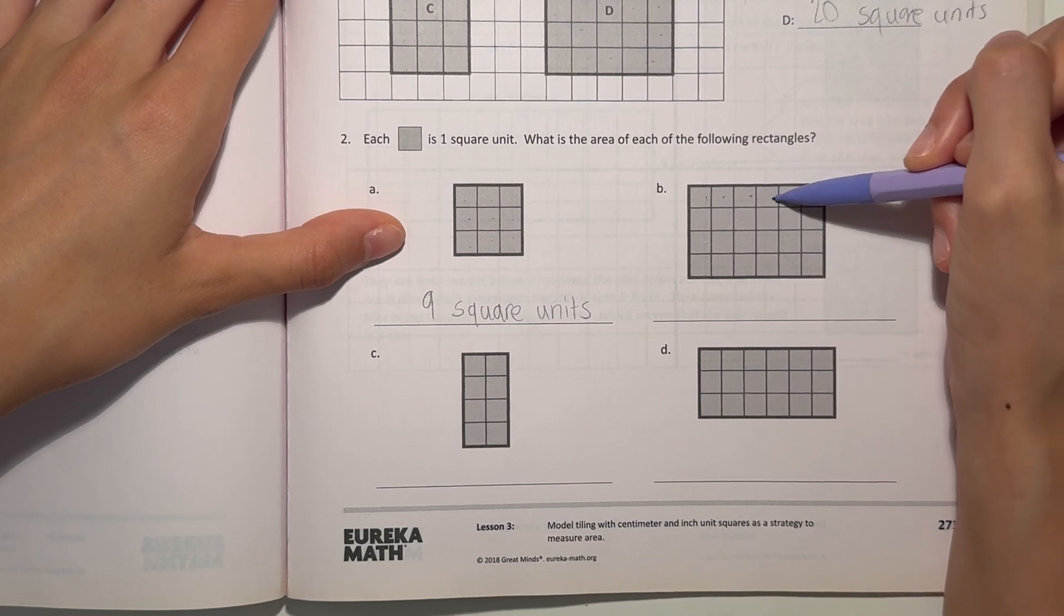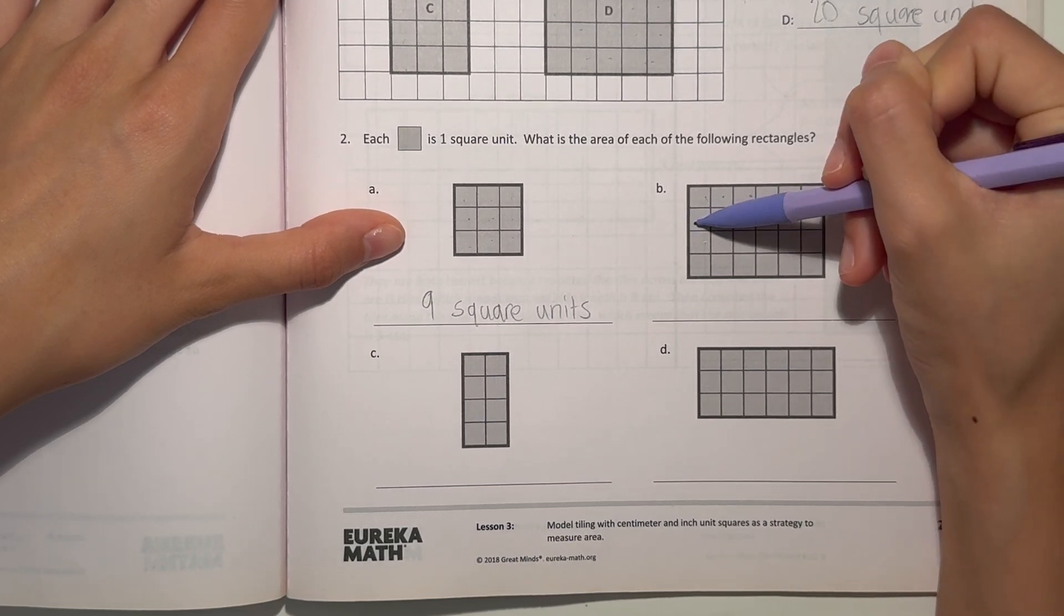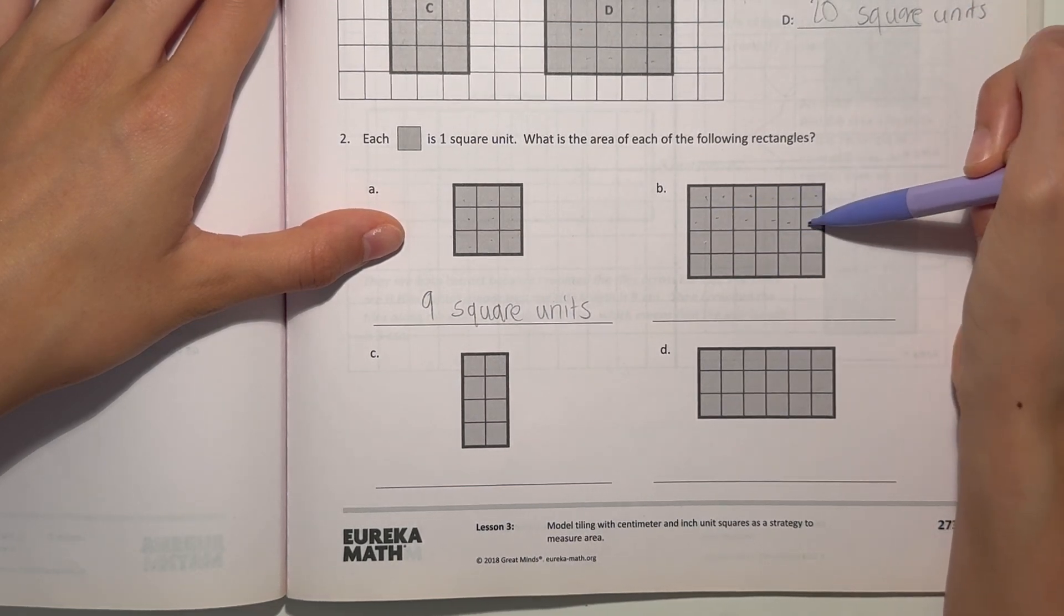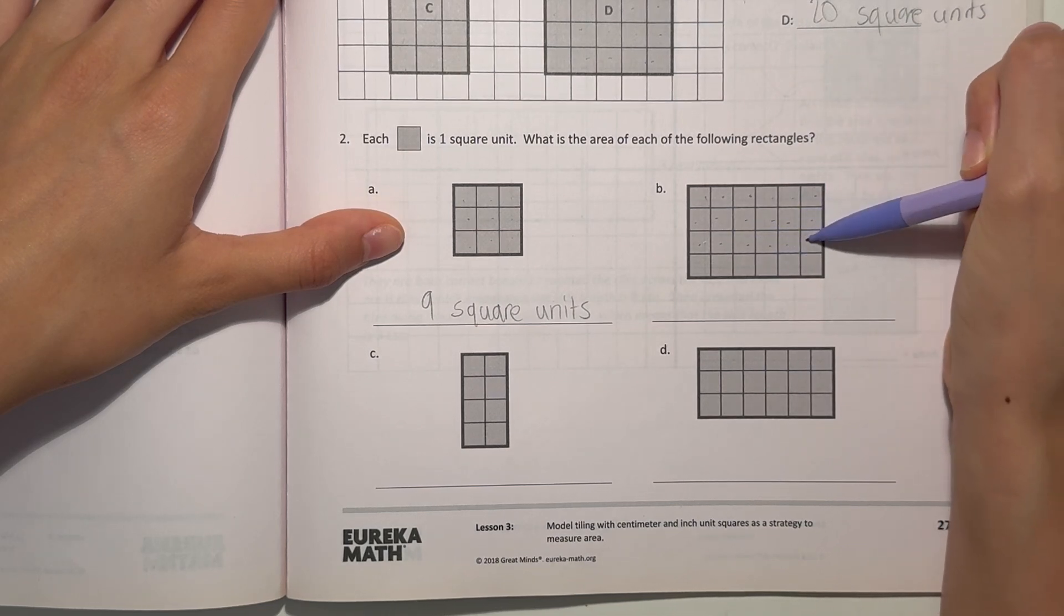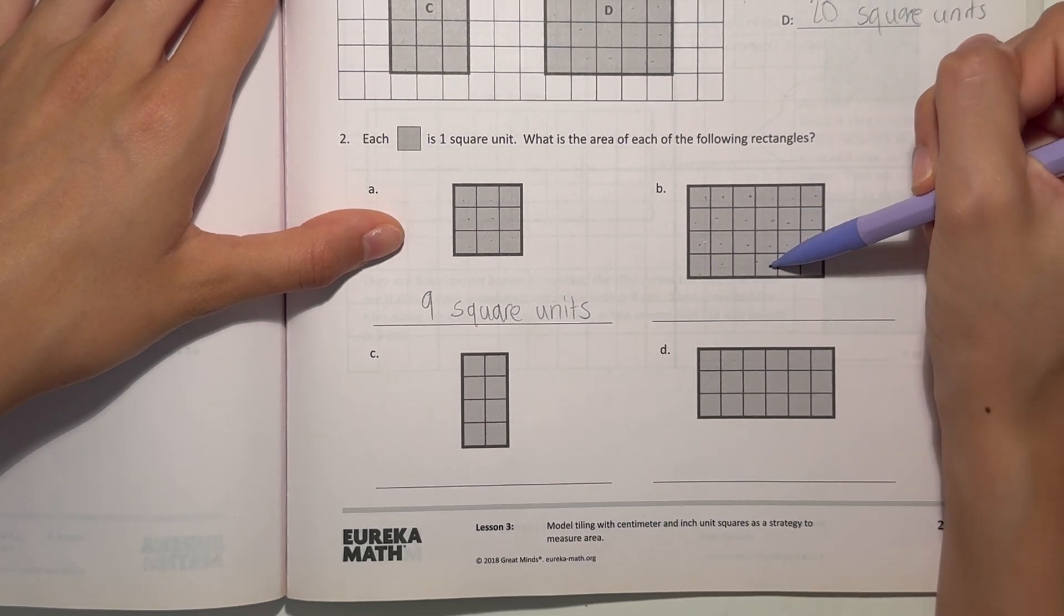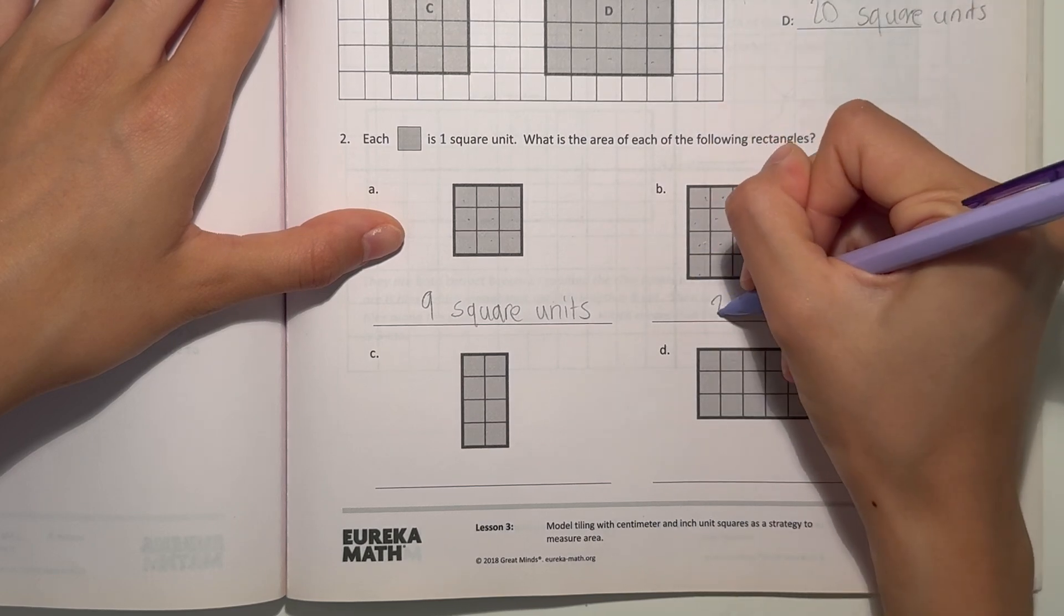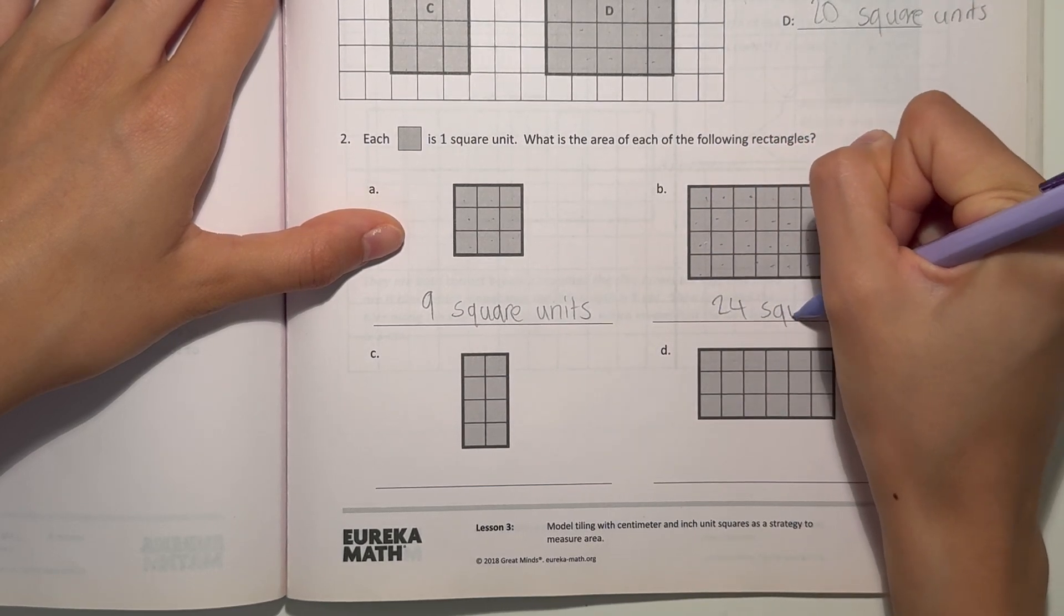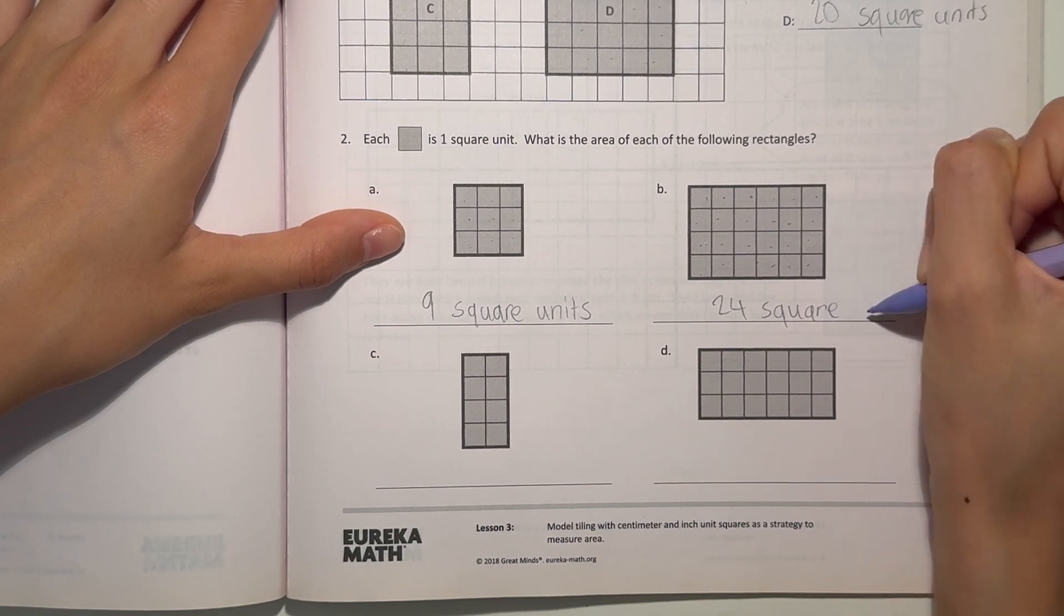B, 1, 2, 3, 4, 5, 6, 7, 8, 9, 10, 11, 12, 13, 14, 15, 16, 17, 18, 19, 20, 21, 22, 23, 24. So the area is 24 square units.